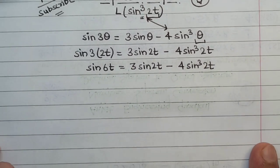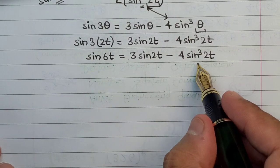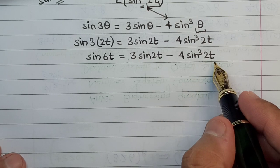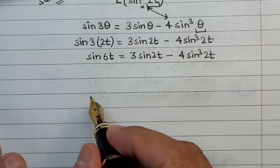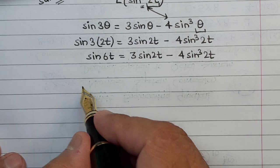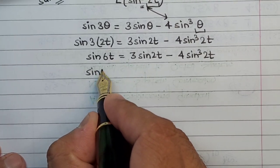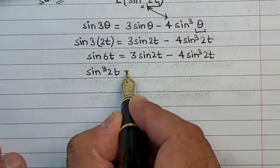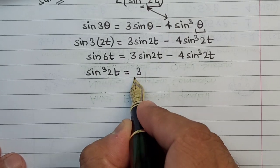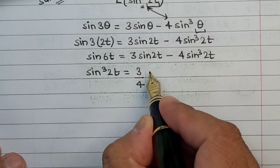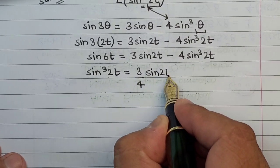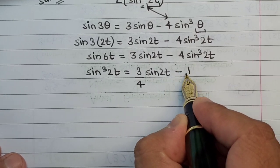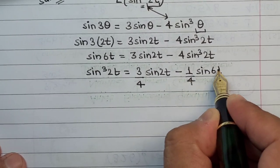In the next step what we have to do is to calculate the value of this sine cube 2t and let's shift this to the left hand side. That means the value of sine cube 2t will be 3 upon 4 sine of 2t minus 1 upon 4 sine of 6t.